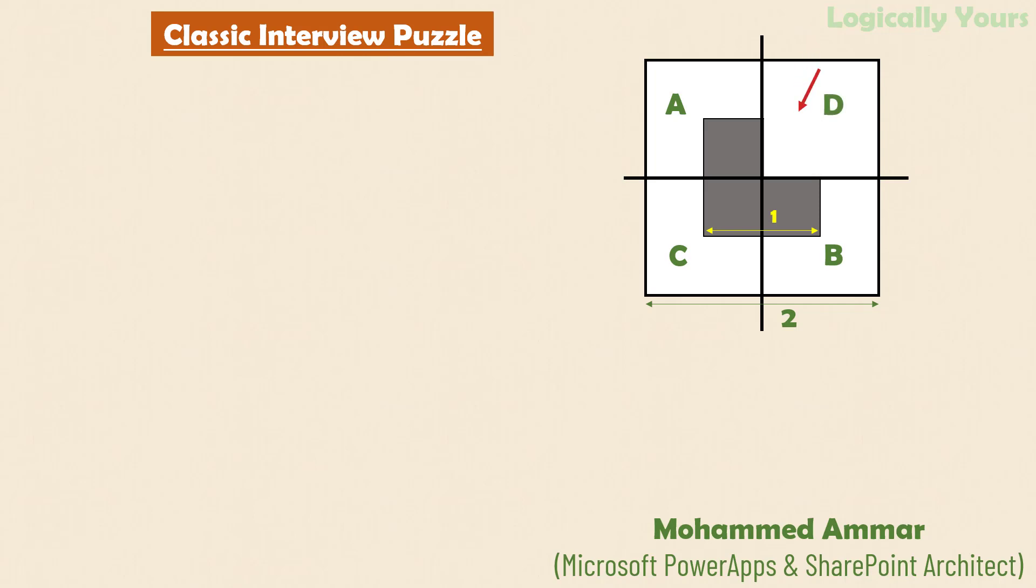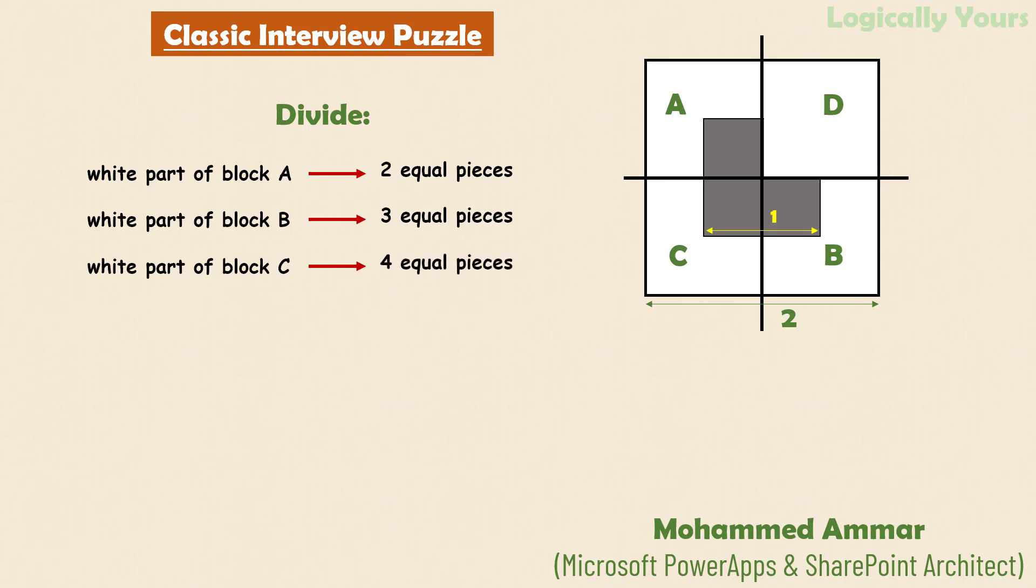This dark portion is removed from the block D. Now the challenge is to divide the white part of block A into two identical and equal sized pieces. Divide the white part of block B into three identical and equal sized pieces. Divide the white part of block C into four identical and equal sized pieces and divide the block D into five identical and equal sized pieces.